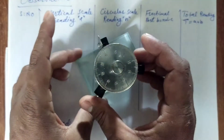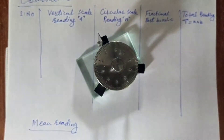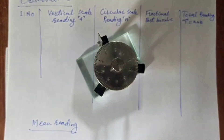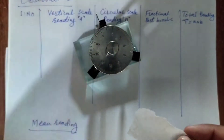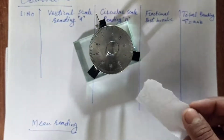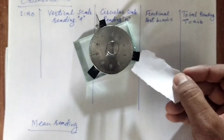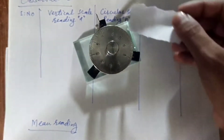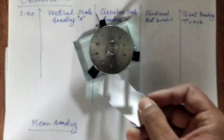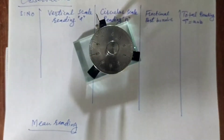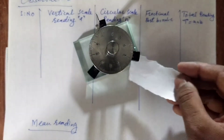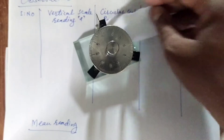How can we check that there is no zero error? We will take a piece of paper and place the spherometer on a glass leg. When we pass the paper through the legs and it will not pass, then there will be no zero error.